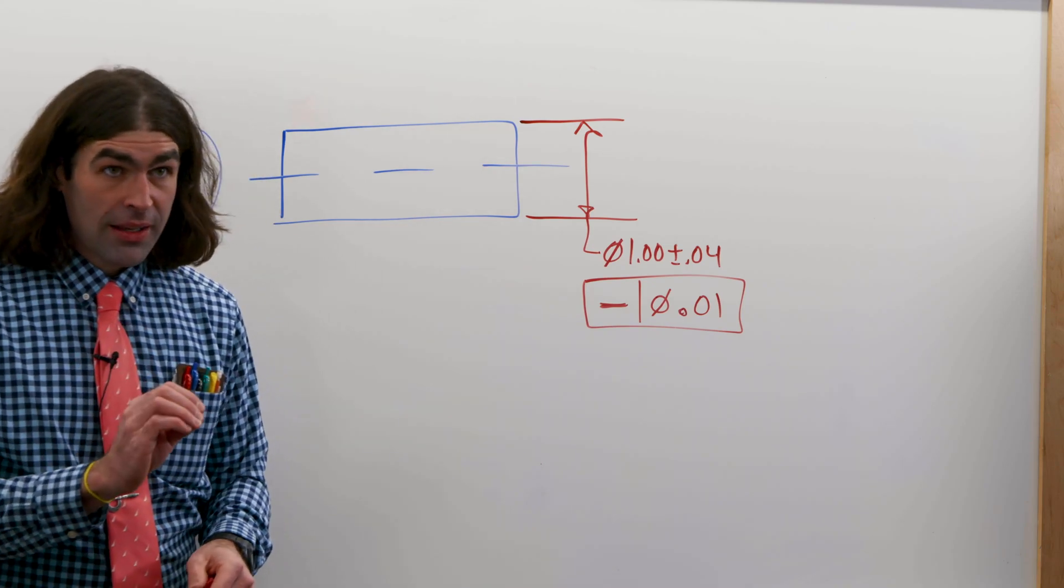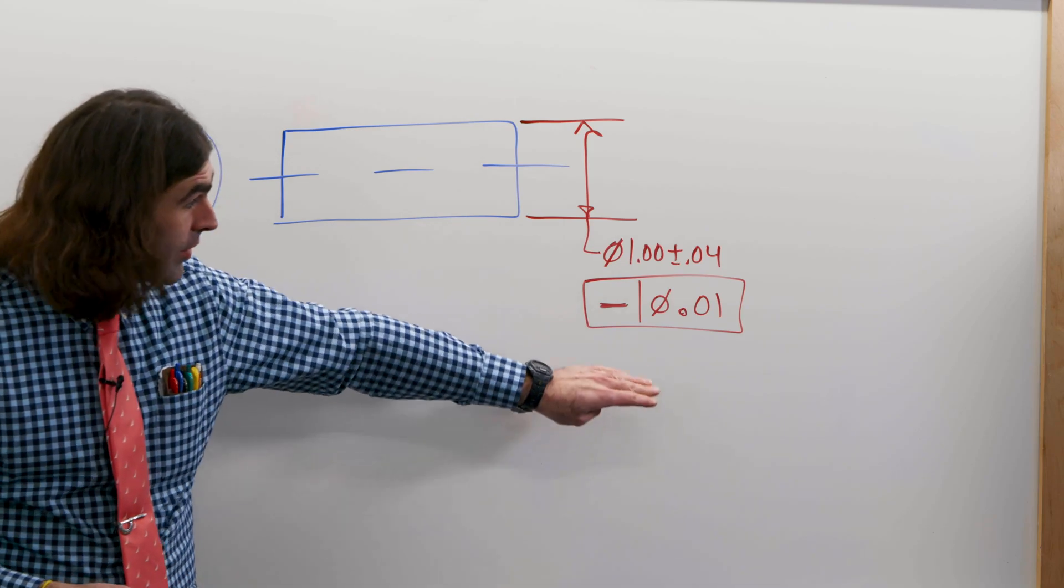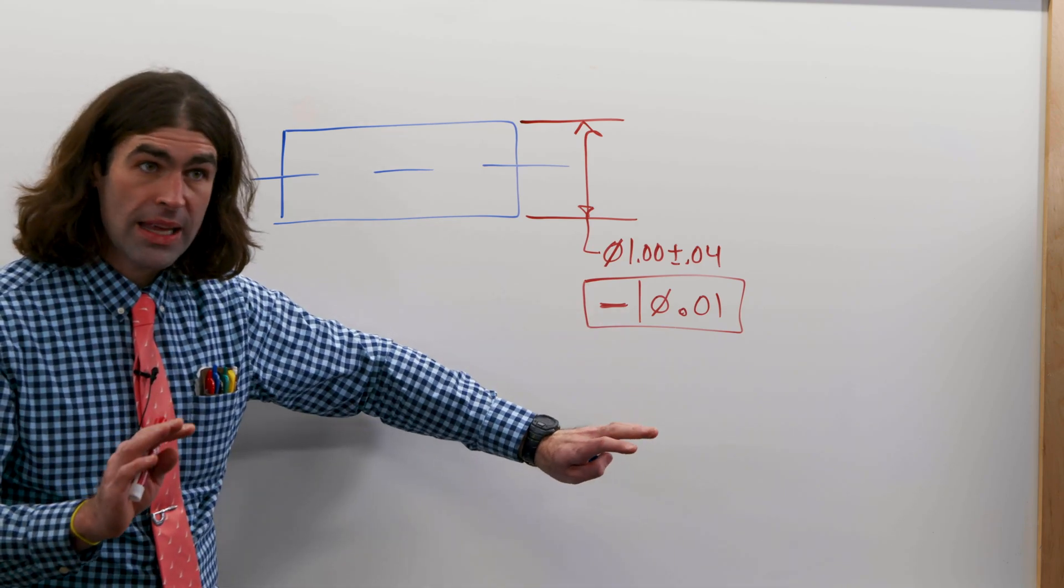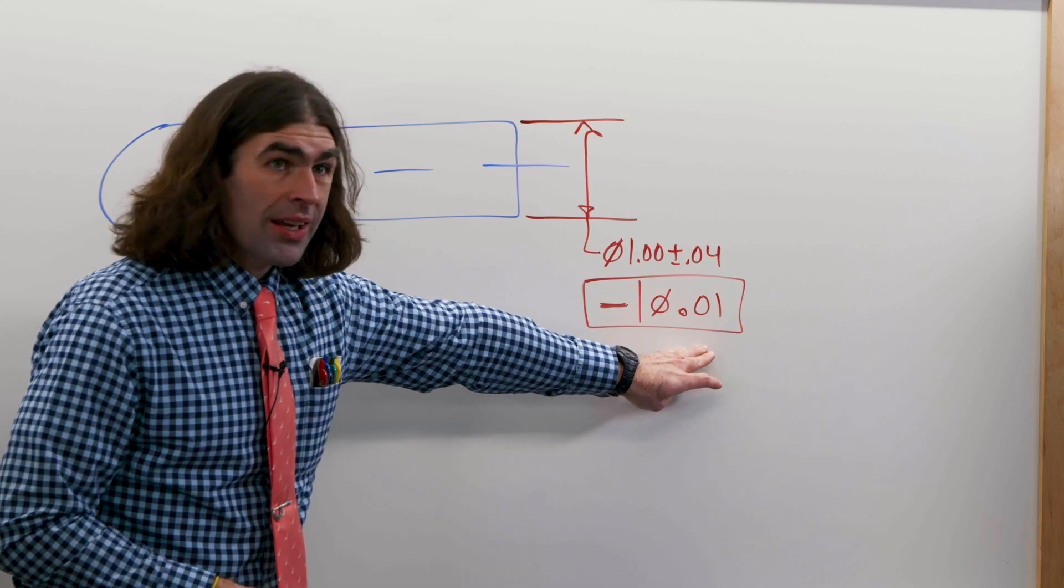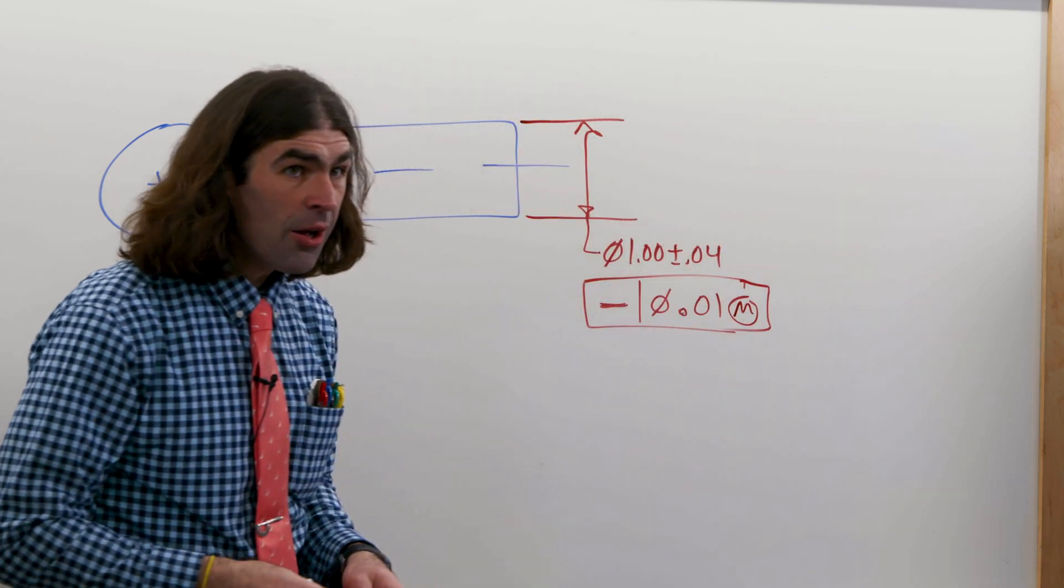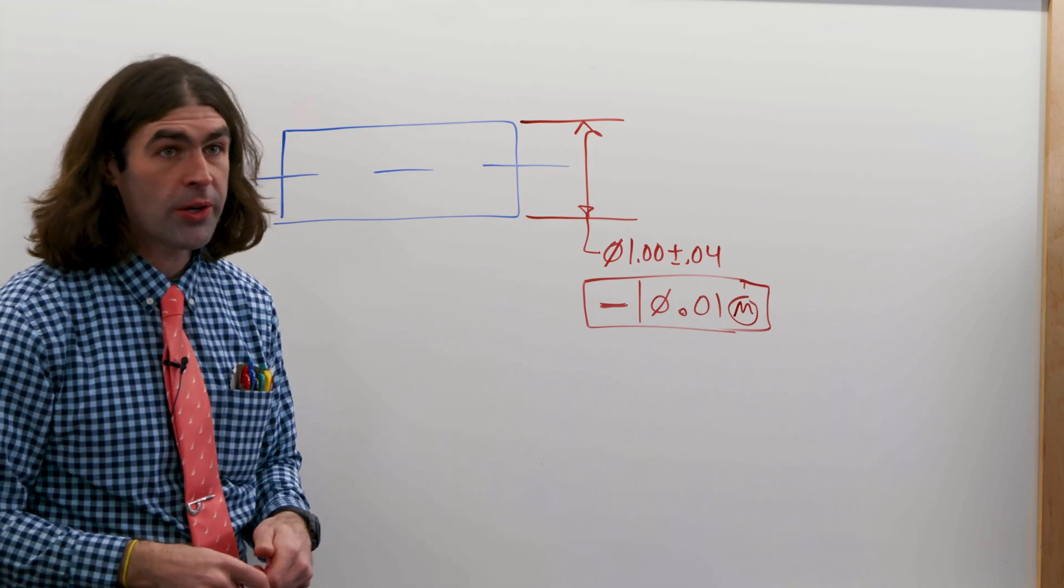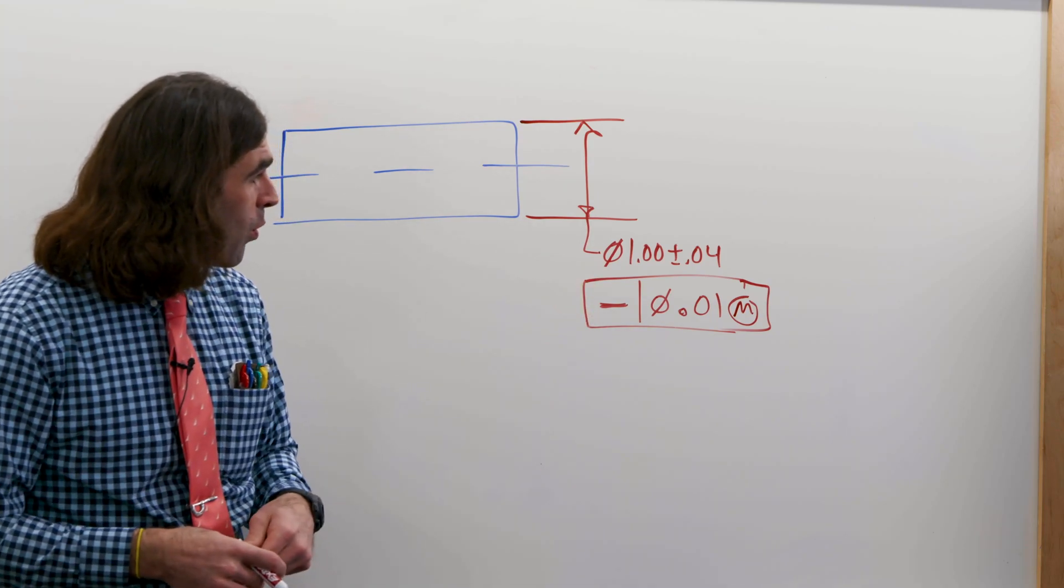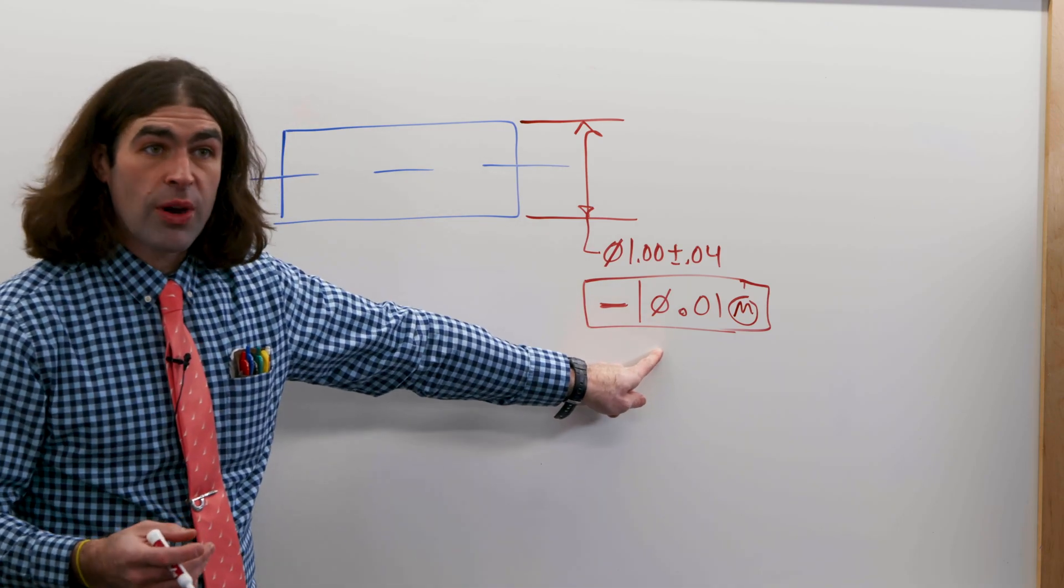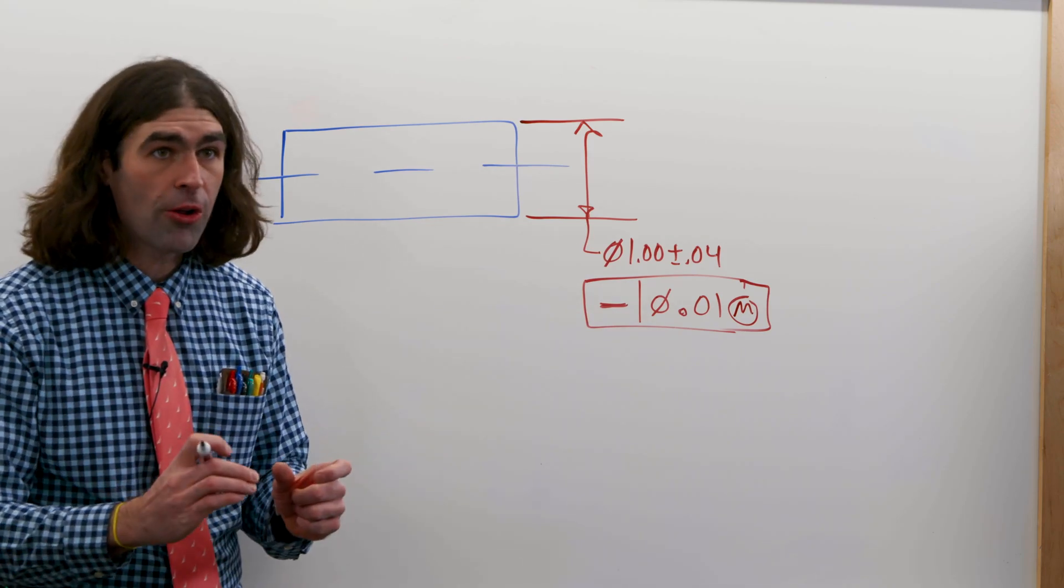Another thing - because it's applying to a feature of size, now material condition applies. So this applies at RFS. You have ten thousandths of tolerance no matter what size the feature comes in at. But if we put an MMC symbol here, now that tolerance only applies when the feature comes in at its MMC, in this case 1.04. If the feature comes in at 1.00, we'd have 50 thousandths straightness tolerance. So the part can be more bent the smaller it gets.